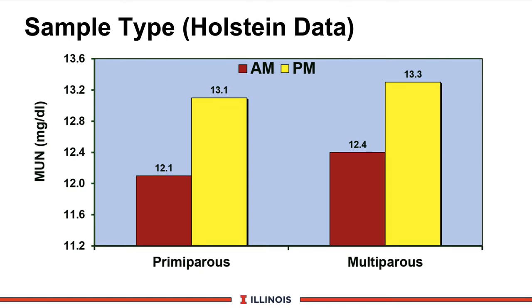Another factor is time of day. In this Wisconsin database, which is very similar to the Pennsylvania database, the PM numbers are slightly higher than AM numbers by one or two points, probably reflecting feeding activity during daytime versus at night in relationship to milk production. We therefore recommend sampling cows on DHI test on the PM milking, which will capture the higher number.